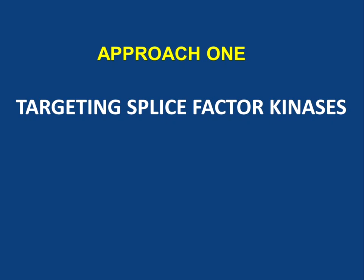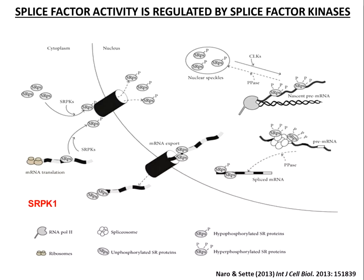This figure from a review by Naro and Sette shows the nucleus with nascent pre-messenger RNAs being transcribed from their genes, with splice factors and the spliceosome binding to these pre-RNAs and mediating splicing. The SR proteins are a very important and abundant class of splice factors. They are phosphorylated mainly in the cytoplasm by a protein kinase called SRPK1 — SR protein kinase. That phosphorylation favours their accumulation into the nucleus, where additional splice factor kinases contribute to their activation and facilitate their recruitment onto pre-mRNA to mediate splicing and alternative splicing.